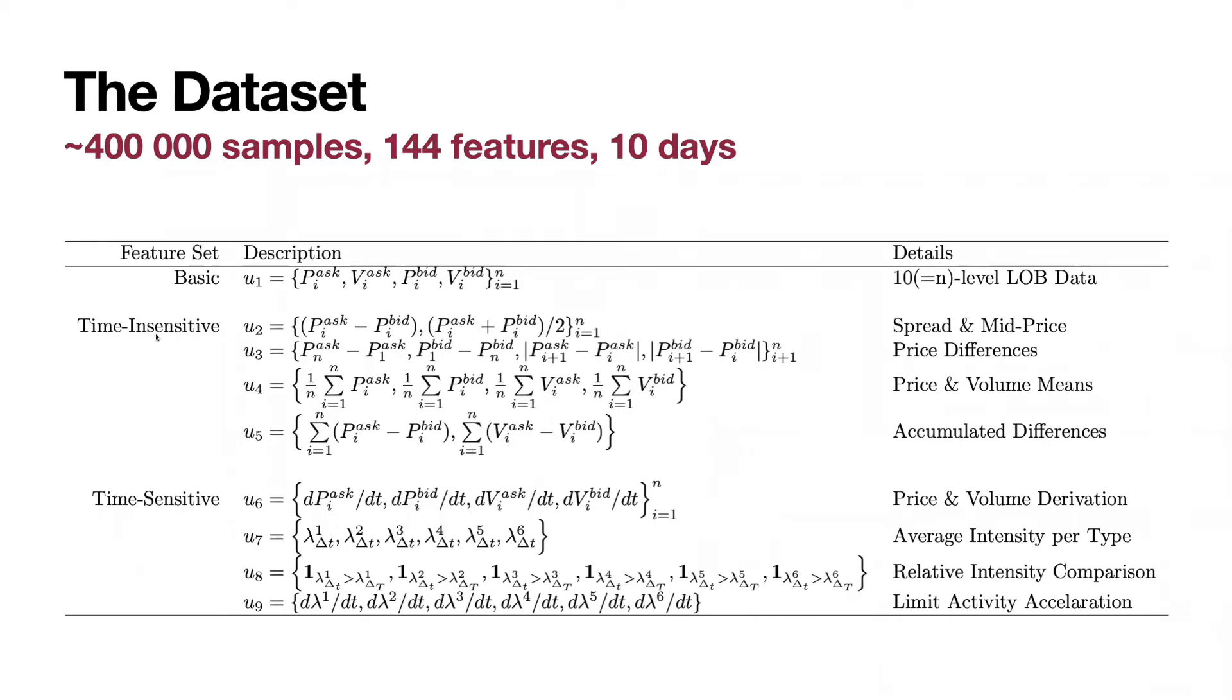Time-insensitive features, they are independent of the timestamp. Time-sensitive features are differences of the previous ask and current ask divided by time that passed between those events, and the same for bids and same for volumes. Intensity is how fast the price changes. These are just indicators, zeros and ones, true or false, at this timestamp larger than this timestamp. So all of that creates our set of 144 available features.